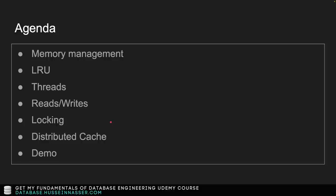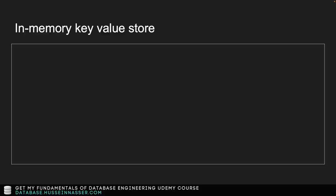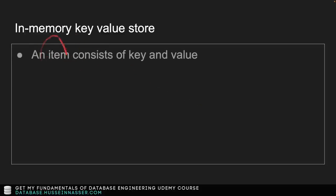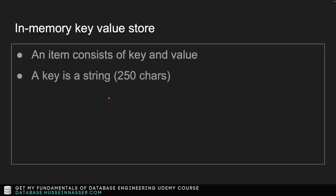We're going to go through a demo using Docker, because you can spin up many instances easily. Now, in-memory key-value store — what does that really mean? An item in Memcached consists of a key and a value. A key must be unique, and it has to be a string, maxing out at 250 characters.